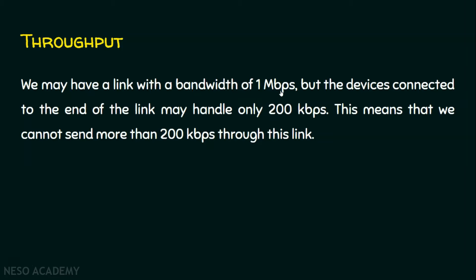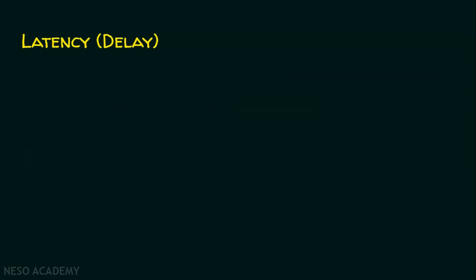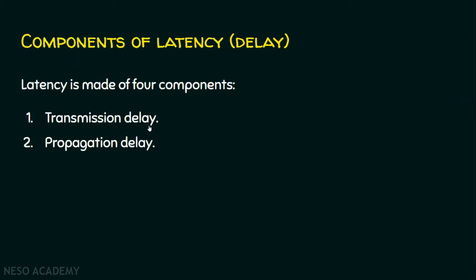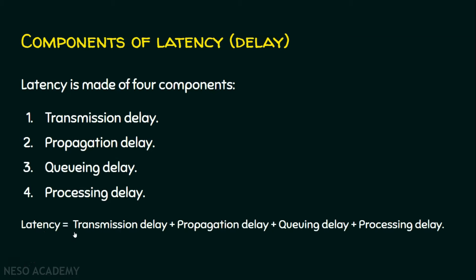Now let's see the last fundamental way of measuring network performance: the delay, also called latency. Latency or delay defines how long it takes for an entire message to completely arrive at the destination, from the time the first bit is sent out from the source to the time the last bit is consumed by the destination — this entire time is the latency. Latency is made up of four components: transmission delay, propagation delay, queuing delay, and processing delay. Latency equals the sum of all four components.